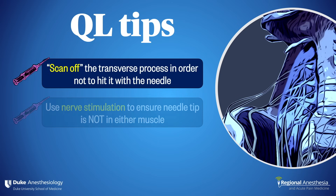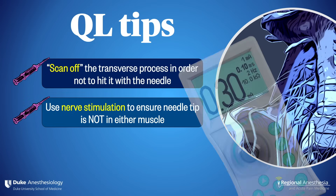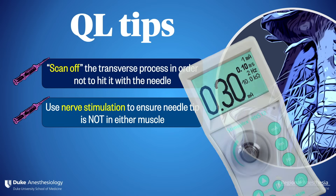Second, there have been cases of quadriceps weakness following QL block, probably due to local anesthetic within the psoas muscle causing a lumbar plexus block. I like to use nerve stimulation to help keep my tip out of QL. I'll turn the current intensity up to 1 or 1.5 milliamps, then watch on the screen as my needle passes through the erector spinae, then the QL muscle, watching for the muscles to twitch with direct muscular stimulation. When the needle passes through QL, it'll stop twitching. If the psoas muscle starts twitching on the screen, your tip is too far — pull back slowly until you're not directly stimulating either muscle. That way you're likely to be in the correct plane.